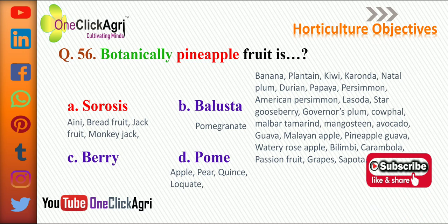In pomegranate, balusta is there. In apple, pear, quince, and blackwood, the fruit is called a pome. For banana, plantain, kiwi, karonda, durian, papaya, persimmon, star gooseberry, mulberry, mangosteen, avocado, guava, water rose apple, bilimbi, carambola, passion fruit, grapes, and sapota — the fruit is called a berry.